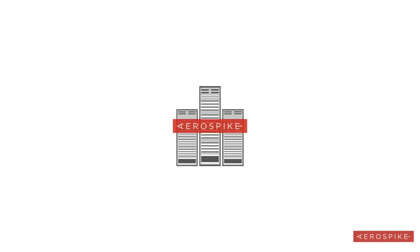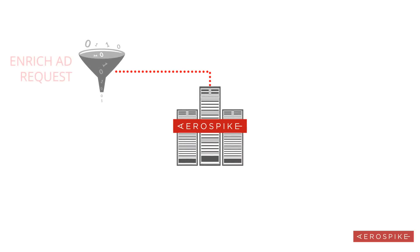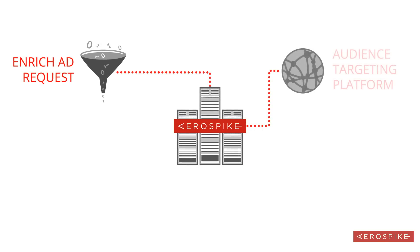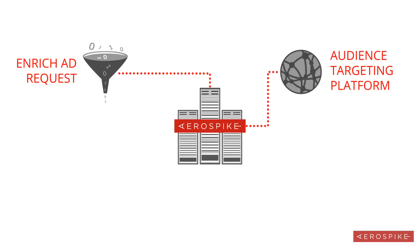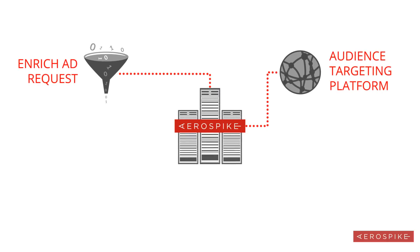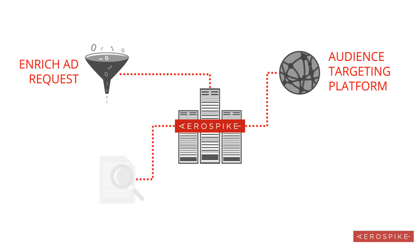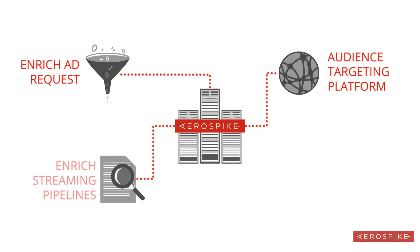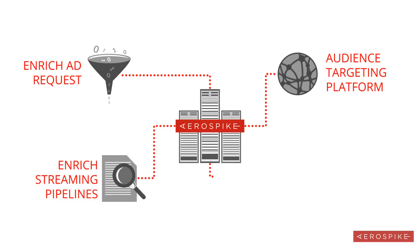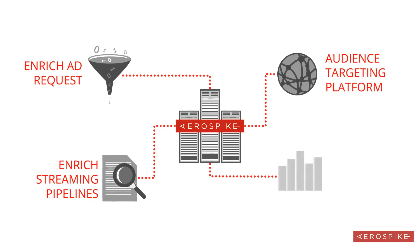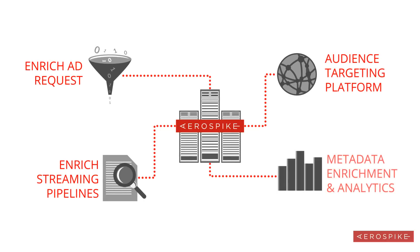We use AeroSpike at InMobi in four different applications today. We use it in the ad serving path to enrich the information about an ad request when we receive it. We also use AeroSpike for our audience targeting platform where we store all the activities and attributes of our users — what we understand about the user. We use AeroSpike for enriching our streaming pipelines because it enables fast lookups. And we also use AeroSpike in some of our metadata applications to provide lookups for metadata for enriching and analytics.